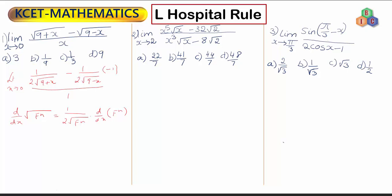When I differentiate root of (9 minus x), the same rule applies: 1 by 2 root (9 minus x) into the differential coefficient of (9 minus x), which is minus 1. We need L'Hôpital's rule here because substituting x equals 0 directly gives root 9 minus root 9 over 0, which is the 0 by 0 indeterminate form.